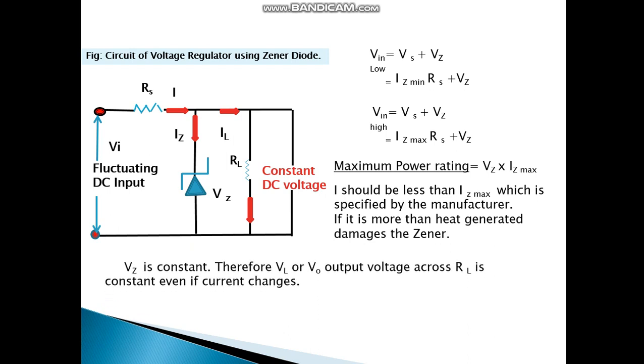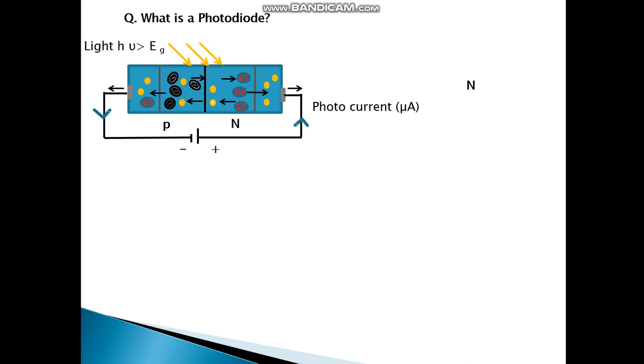Vz is constant. Therefore, VL or V output voltage across RL is constant even if current changes. Zener diode is used as a voltage regulator, peak clipper or wave shipper, and protecting meters.